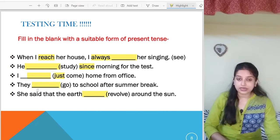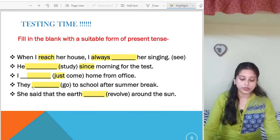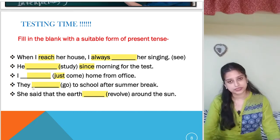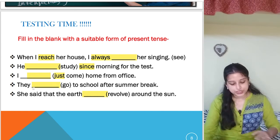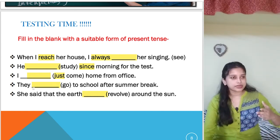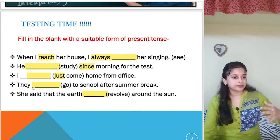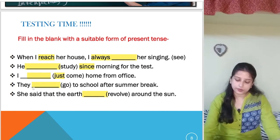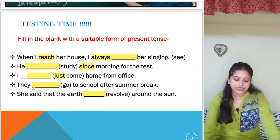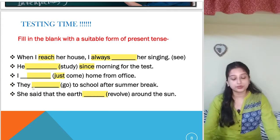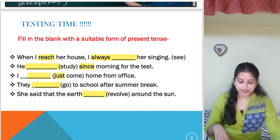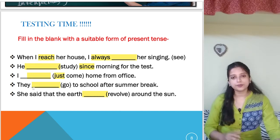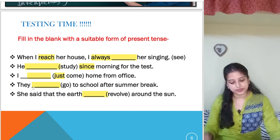You can also say 'They are going to school after summer break' — that is also correct, if that person is walking to school at that moment. Last question: 'She said that the earth ___ around the sun.' This is a universal fact, so the answer is: 'revolves around the sun.' Simple present tense.